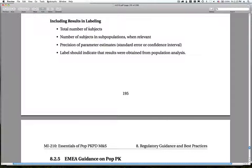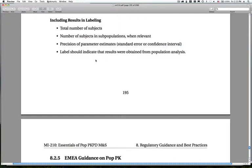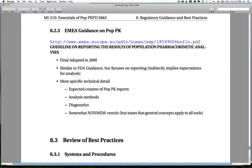When including results in labeling, there's a note in the guidance to make sure to identify the total number of subjects in different subpopulations when relevant. And the precision of the estimates around these things. The label should indicate that the results were obtained from population PK analyses. So, read the FDA guidance. It's very useful. It highlights a lot of things we've discussed in the course.